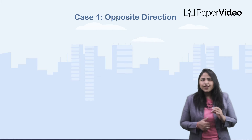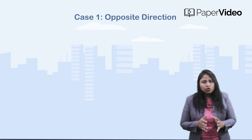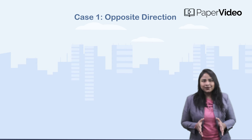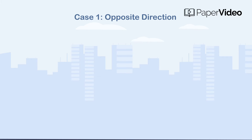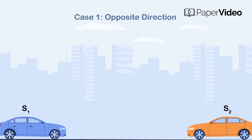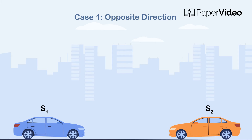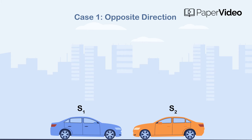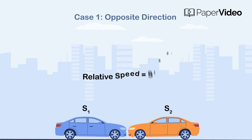The first case is when the bodies are moving in the opposite direction. Suppose two bodies are moving in the opposite direction at the speed S1 and S2 respectively. Then the Relative Speed is given as S1 plus S2.